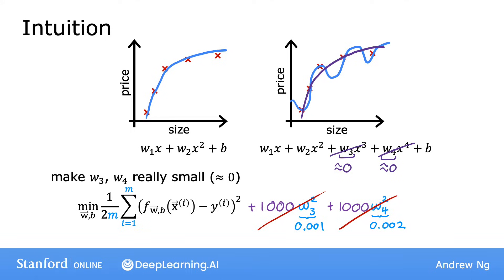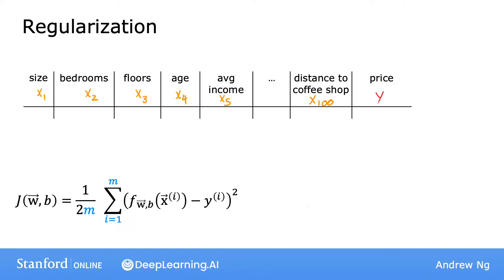And if we do that, then we end up with a fit to the data that's much closer to the quadratic function, including maybe just tiny contributions from the features x cubed and x to the fourth. And this is good because it's a much better fit to the data compared to if all the parameters could be large and you end up with this wiggly quadratic function.